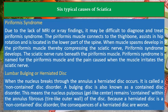Piriformis Syndrome. Due to the lack of MRI or X-ray findings, it may be difficult to diagnose and treat piriformis syndrome. The piriformis muscle connects to the thigh bone, assists in hip rotation, and is located in the lower part of the spine. When muscle spasms develop in the piriformis muscle, thereby compressing the sciatic nerve, piriformis syndrome develops. The sciatic nerve runs beneath the piriformis muscle, and the syndrome is named for the pain caused when the muscle irritates the sciatic nerve.